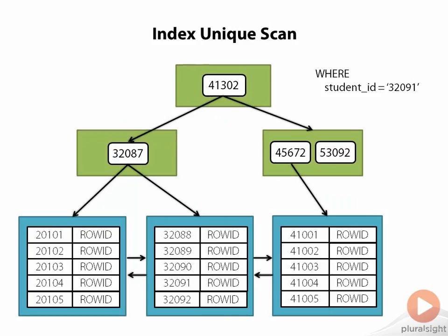If you have a unique index on your table and you specify the value that you need in your WHERE clause, Oracle will perform an index unique scan. Once again, Oracle will traverse the B-tree structure of the index, but in this case, Oracle knows because the index is unique, it is only looking for a single index key and therefore a single row ID.